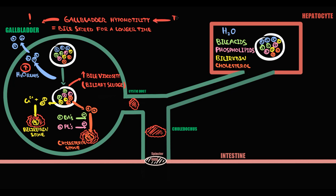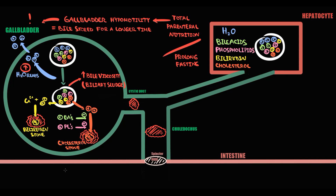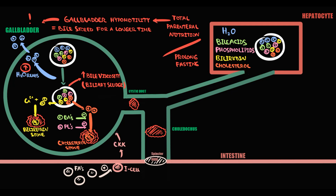A factor that causes gallbladder hypomotility is total parenteral nutrition or prolonged fasting. To increase the motility of the gallbladder, we need cholecystokinin, and to produce cholecystokinin, we need intake of fatty acids into the duodenum. Fatty acids stimulate I-cells of the duodenum to produce cholecystokinin, and cholecystokinin induces contraction of the gallbladder. On total parenteral nutrition or with prolonged fasting, the intake of fatty acids decreases. Without fatty acids, there is no stimulation of the I-cells and thereby no production of cholecystokinin, and without cholecystokinin we cannot provide contractility of the gallbladder.